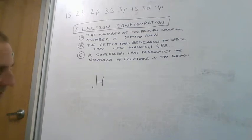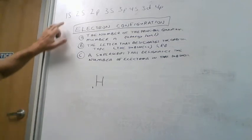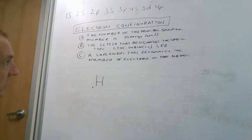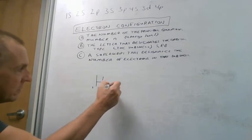So if we have all those orbitals available, the 1s, 2s, 2p, etc., where are we going to find that one electron? Well, it's going to be in the lowest energy, and it's going to be in the 1s level.